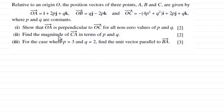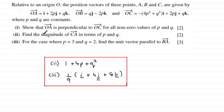Okay, welcome back then, if you had a go. Now for part one, we had to show that OA is perpendicular to OC, so I can't give you that answer as such. But for the numerical answers to two and three, the magnitude of the vector CA is 1 plus 4P squared plus Q squared, and in part three, the unit vector that's parallel to BA is 1 ninth multiplied by I plus 4J plus 8K.